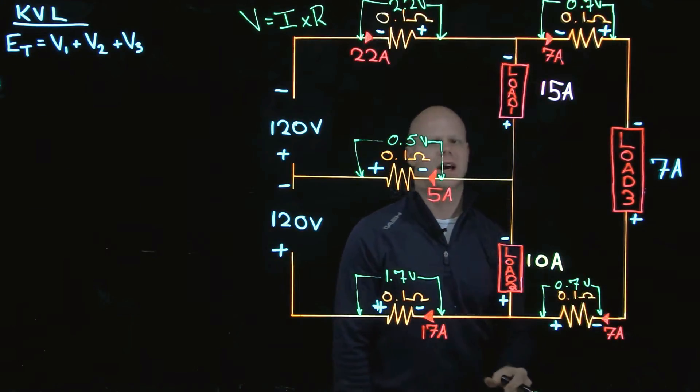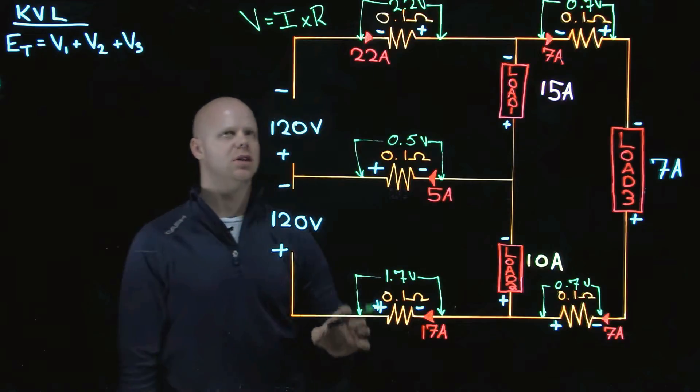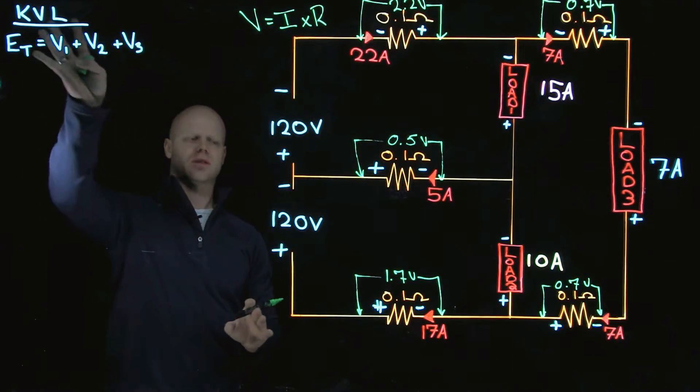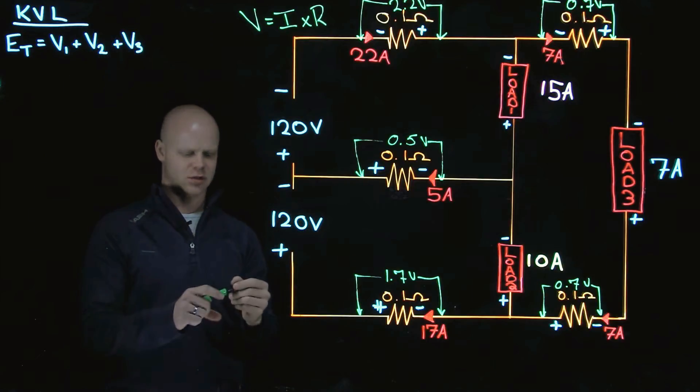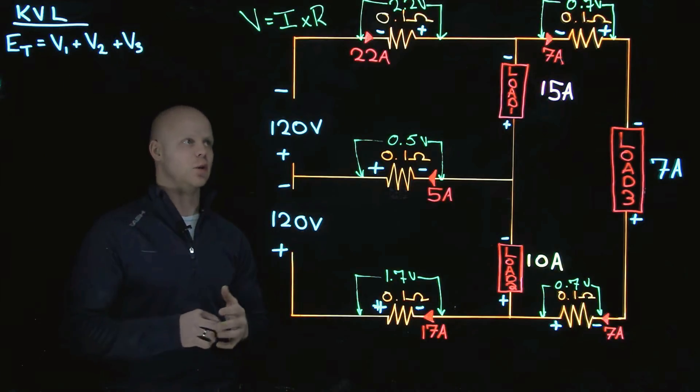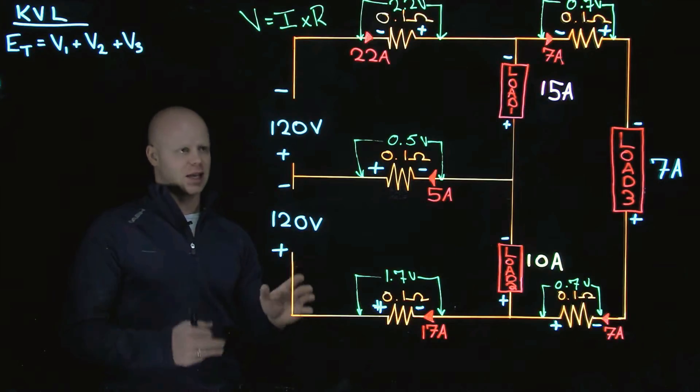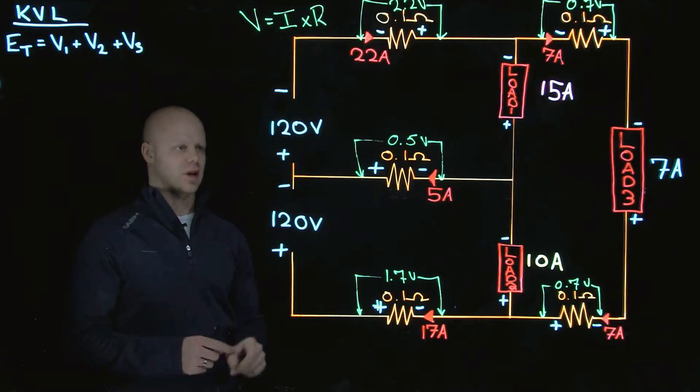So now that we have these values, just by using V equals I times R, we can analyze. We can use Kirchhoff's voltage law and look at these closed loops. I have many closed loops within this circuit. There's lots of ways to analyze this circuit. And at the end of the day, they all have to work.